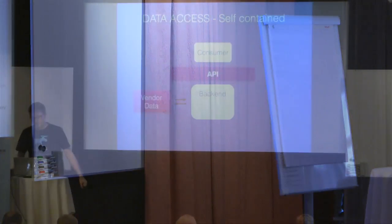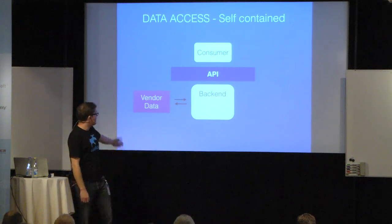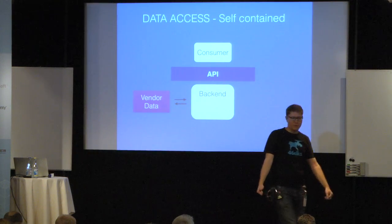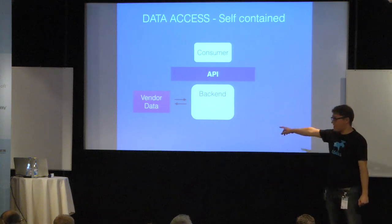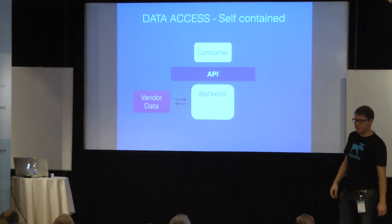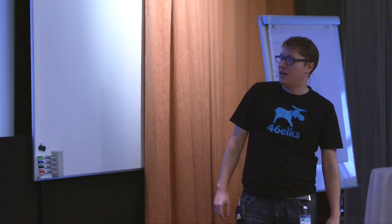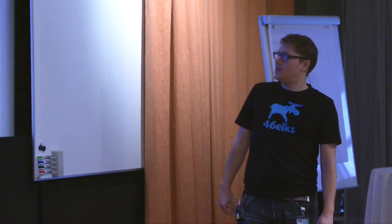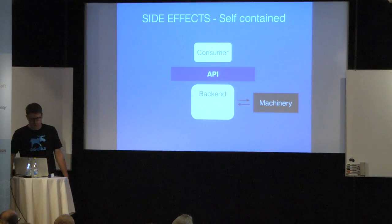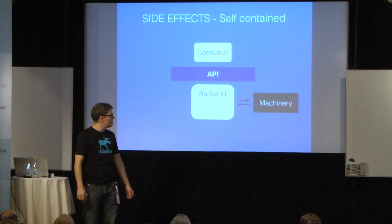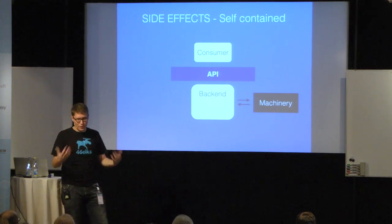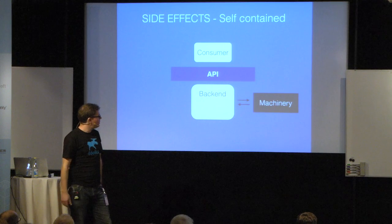Then you have vendor dependent data access APIs, where you have vendor data on one end and it has to go back and forth. You have to work with things like throughput because these tend to be more legacy systems — you're not allowed to do as many requests as you like to that vendor data, and you can't control when they do updates. Completely different architecture is needed when working with this. For side effects but self-contained, you have your own machinery, like printing. You can control the whole perspective, so the challenges, while not easy, are easier to solve.